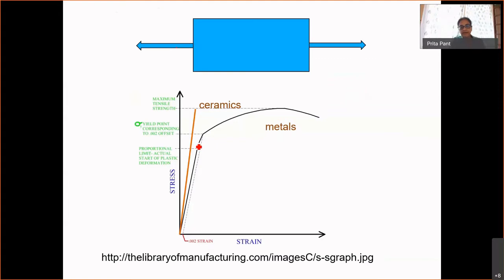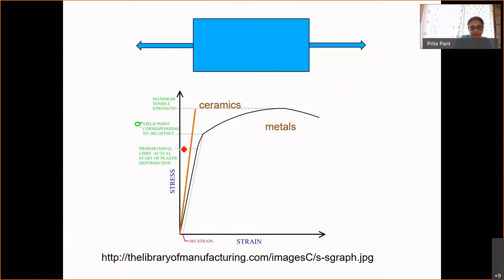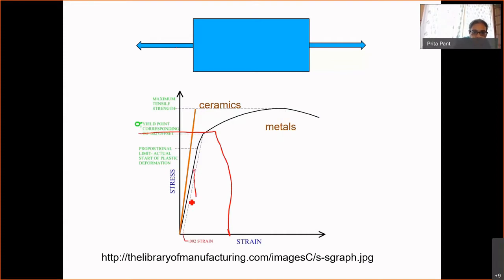Don't worry about the red line — I drew it simply to say a brittle ceramic, like the cups we drink coffee from, would behave like that red line. They would have none of this plastic deformation; if you load it too much, it's going to break. But for metals, we are interested in this part of the curve where stress versus strain is elastic, and the slope of this is what I use to measure the stiffness.